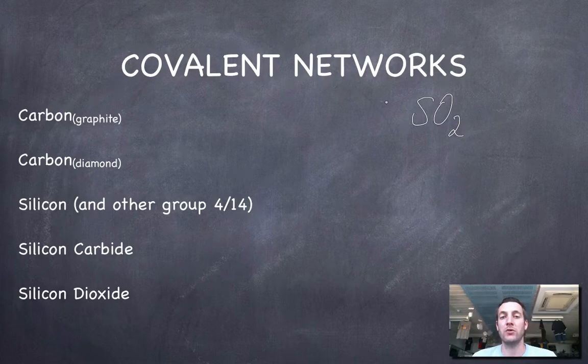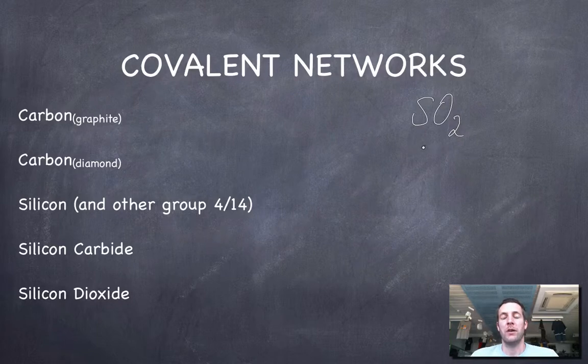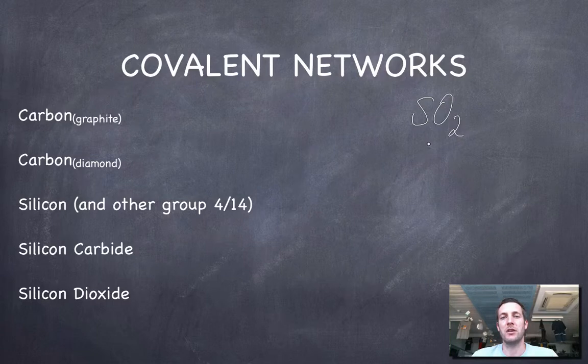With covalent networks, although they are molecules joined together with covalent bonds, it's not easy to write a formula that describes the size of the molecule because the size of the molecule depends on how much of the material you have.